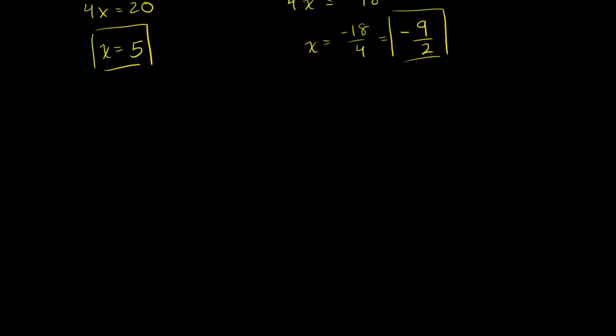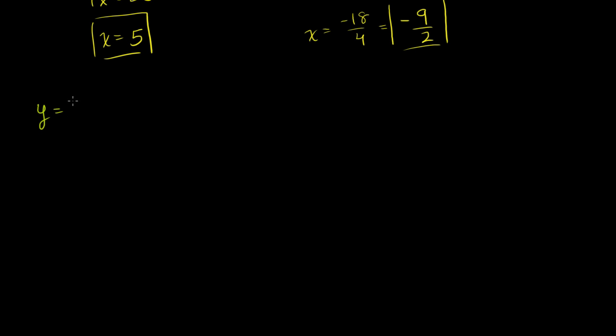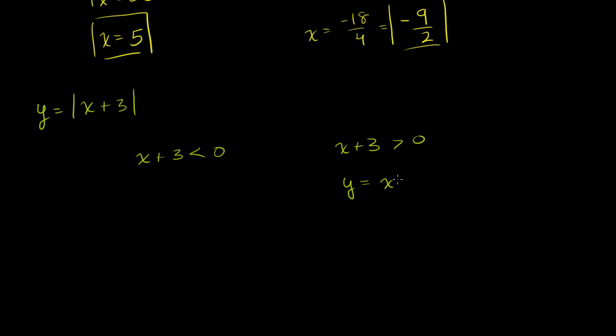Let's try to graph one of these just for fun. We have y is equal to the absolute value of x plus 3. Let's think about two scenarios. In the scenario where x plus 3 is greater than 0, the absolute value sign is irrelevant, so the function is the same as y equals x plus 3. This happens when x is greater than negative 3. So when x is greater than negative 3, this graph is going to look just like y equals x plus 3.